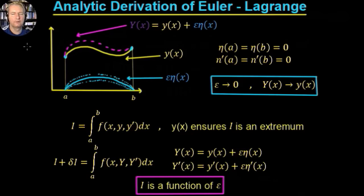Let's look at deriving the Euler-Lagrange equation analytically. This was a derivation that Joseph Lagrange came up with. Previous to this derivation, Euler had derived it, but he had used a localized derivation.